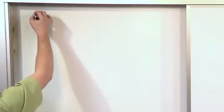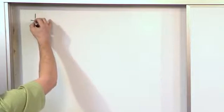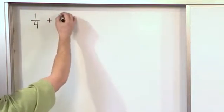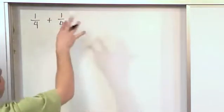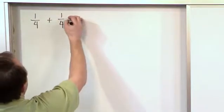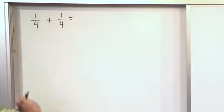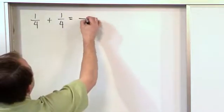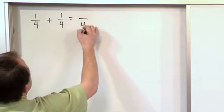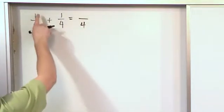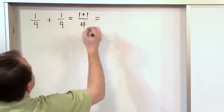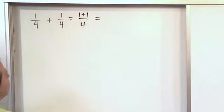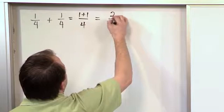So what if we had a fraction like 1 fourth, and we're adding to that a second fraction, also shown as 1 fourth? How do we add it together? Well, first thing we check is: are the denominators the same? And they are. So we just keep that denominator along for the ride. And then we add 1 plus 1, and so what you'll get is 2 fourths.